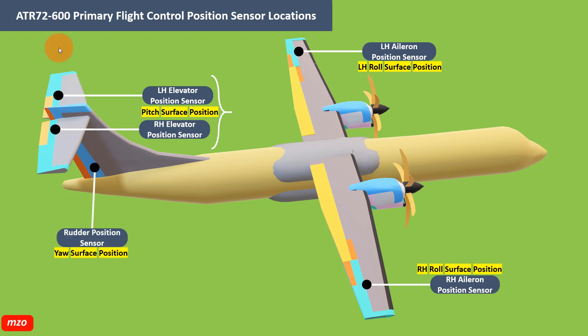Today I am going to show you the primary flight position sensor and location, and how to access from the MCDU aircraft menu in order to check your flight control position — how is the error position, how is the elevator and the rudder position.